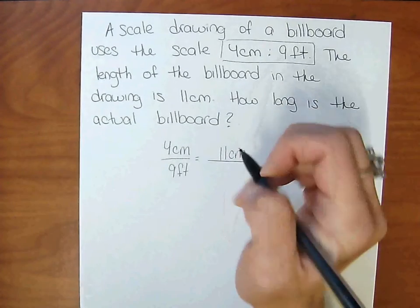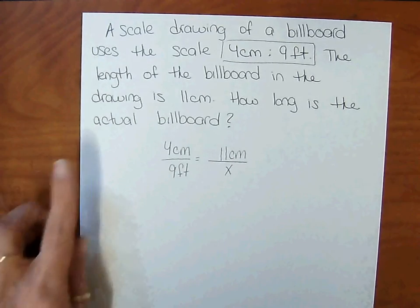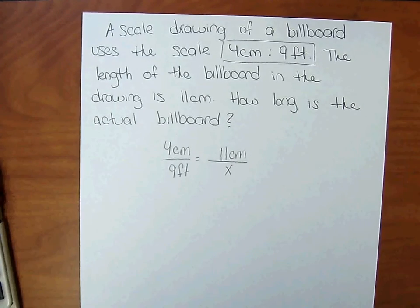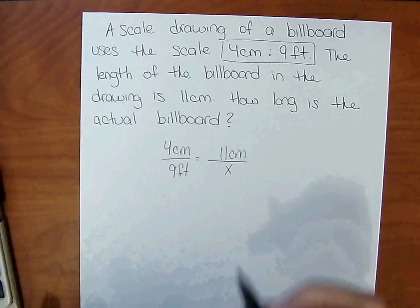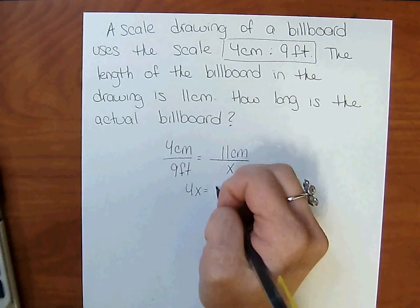And then x in the denominator, because we're trying to find the actual billboard, and the actual length will be in feet. So cross multiply. 4x equals 99.